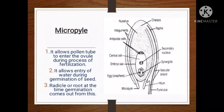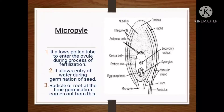The micropyle: wherever the integument is not present, a small opening is present — that is known as the micropyle. The micropyle allows the pollen tube to enter the ovule during the process of fertilization. It allows entry of water during germination of the seed. The radicle or root at the time of germination also comes out from the micropyle. When the pollen tube enters inside the nucellus and embryo sac through the micropyle during fertilization, that process is known as porogamy.